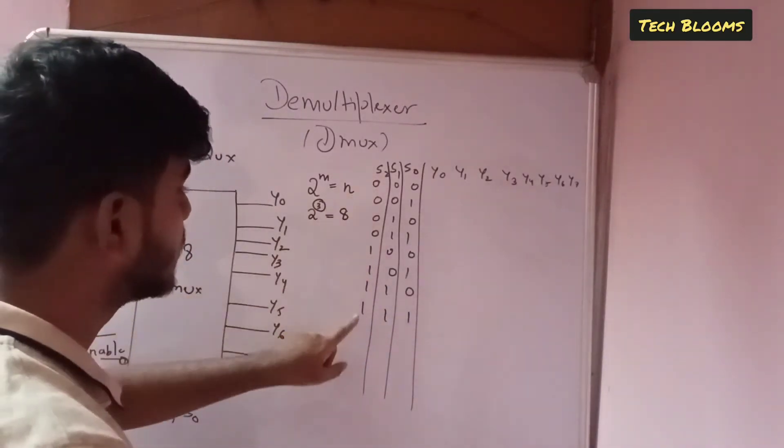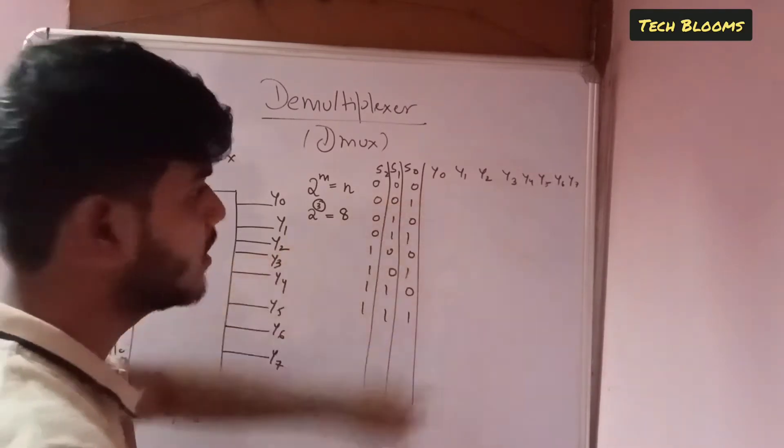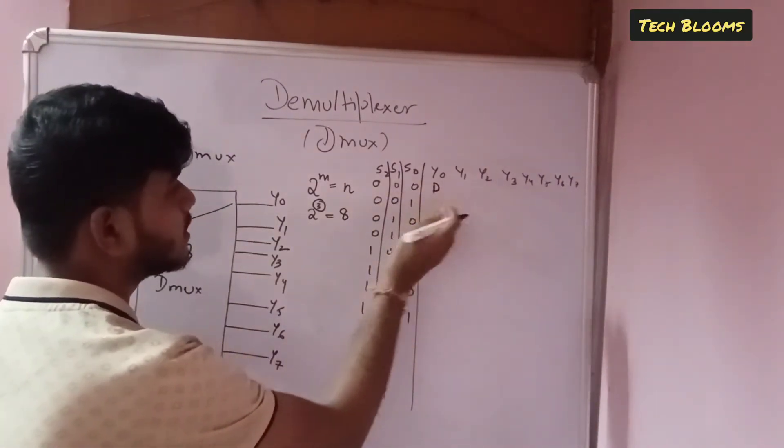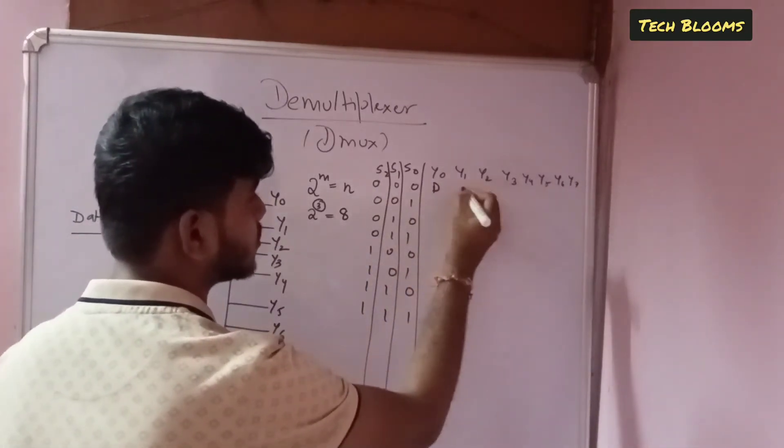Now all these cases we need to whenever it is 0 0 0, your y0 will be selected and your data will be passing to y0. In such cases the others will be all 0s.